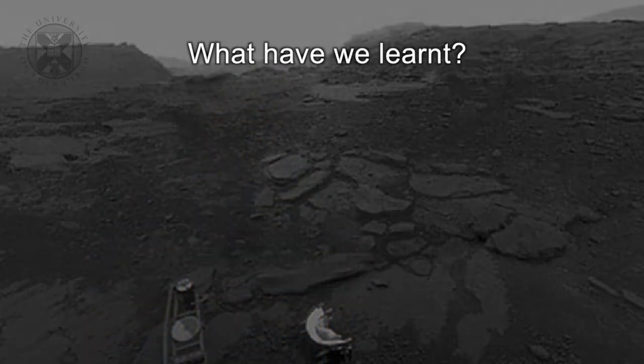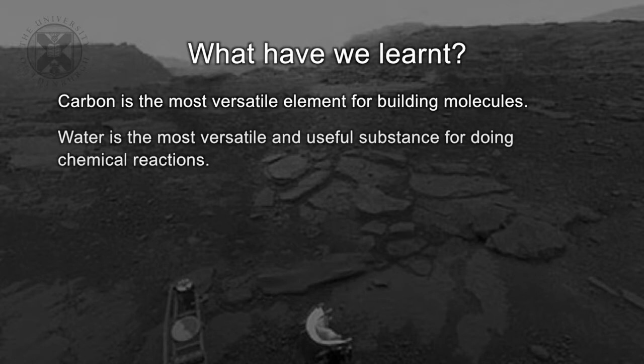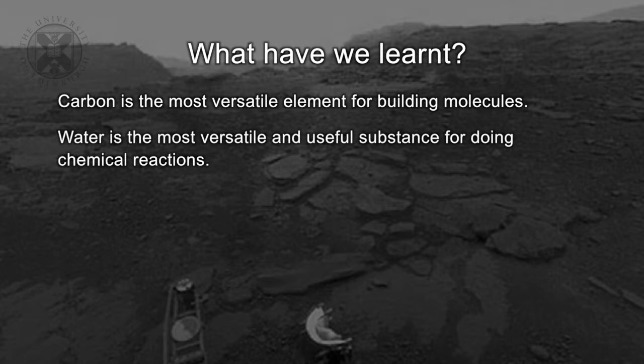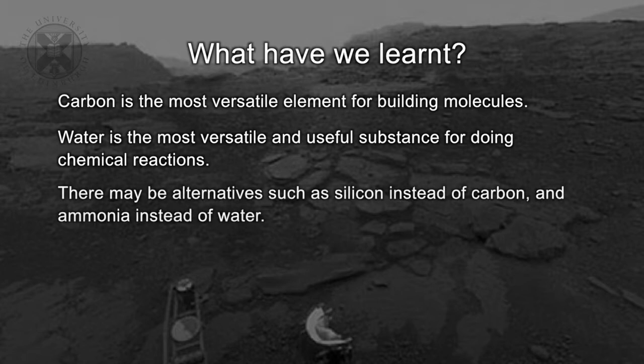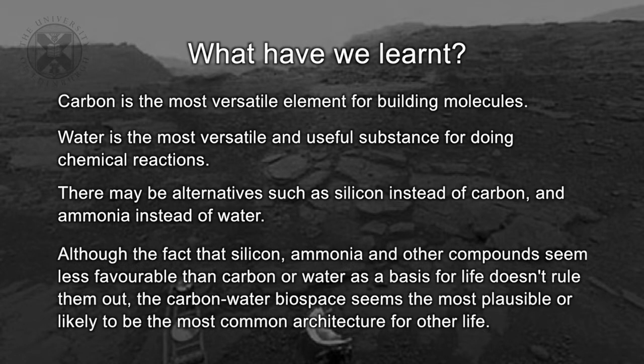So what have we learned in this lecture? We've learned that carbon is the most versatile element for building molecules, at least as far as we can understand based on our current knowledge of chemistry. We've also learned that water is the most versatile and useful substance for doing chemical reactions. We've learned that there are other alternatives, such as silicon as a basis for molecules and ammonia instead of water. And we've learned that the fact that silicon, ammonia, and other compounds seem less favorable than carbon and water as a basis for life doesn't rule them out. The carbon-water biospace seems to be the most plausible and likely most common architecture for other life, but as astrobiologists we should keep an open mind. There may well be other planets out there, perhaps rarer than the Earth, in which these alternative chemistries are being experimented with as the basis of life.